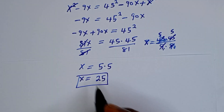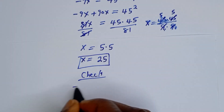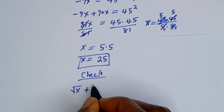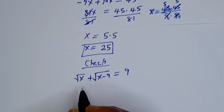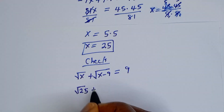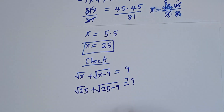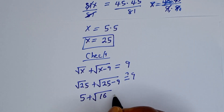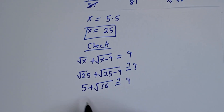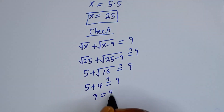We can check to confirm if our answer is right. To check, we substitute into the original equation: square root of 25 plus square root of 25 minus 9 must equal 9. Square root of 25 is 5, and 25 minus 9 is 16, so square root of 16 is 4. Then 5 plus 4 equals 9, which is true.